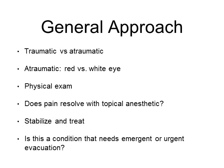So the general approach. First, figure out whether your eye condition is traumatic versus atraumatic. If it is atraumatic, further characterize this into red versus white eye, and we will talk about this in part 2 of the lecture series. Then perform your physical exam. Another important task is to figure out whether the pain resolves with administration of topical anesthetic, because if it does, this points to a more superficial condition of the eye. Then you will stabilize and treat the patient depending on what you think is going on, and figure out whether they need emergent or urgent evacuation from the field.